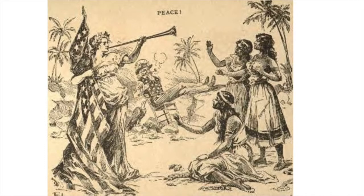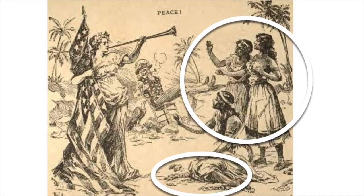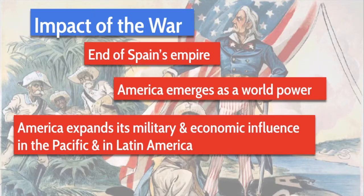In another political cartoon, we see three women representing Puerto Rico, Cuba, and the Philippines. Uncle Sam is in the background with his feet up, rocking back in his chair smoking his pipe with the bald eagle next to him, relaxing now that the war is over. At the bottom of the image, the chains have been broken, and Lady Liberty is blowing her horn of freedom, releasing these people from their bondage to Spain — though whether they are truly going to be free is really the big question.